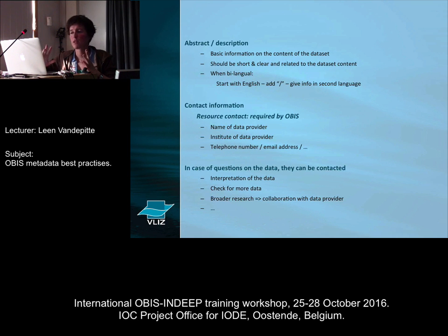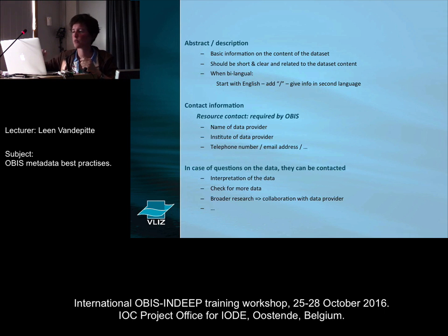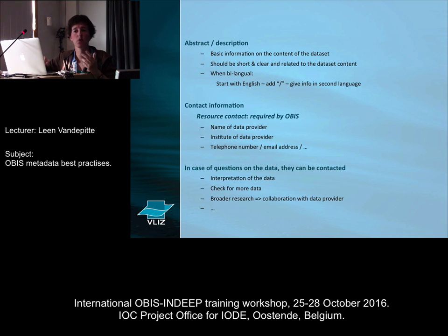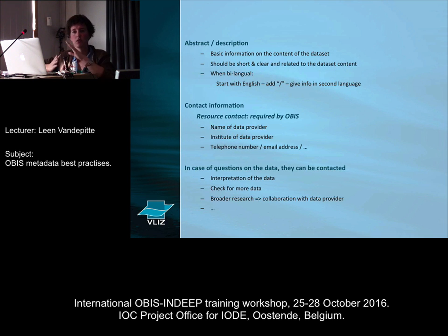Next to a title, IPT also asks you to provide an abstract or description — basic information on your dataset, comparable to the abstract in a paper where you give a summary of what it's about. For some OBIS nodes that work in two languages — for example, the Canadian node with both English and French — it's required to have both an English and a French abstract. What you can do is start with the English one, add a slash, and then put the French version. So it's possible to have two languages within that one abstract field.